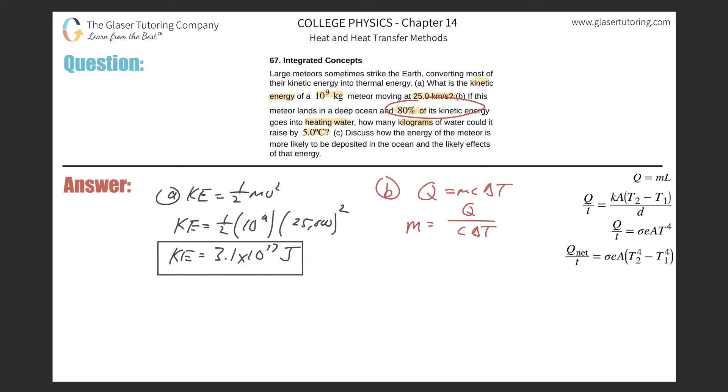Well, they said 80% of its kinetic energy basically gets converted into thermal energy. So what I'm going to do is take 80% of this number. So it's 3.1 times 10 to the 17th multiplied by 0.8. That'll represent 80%.